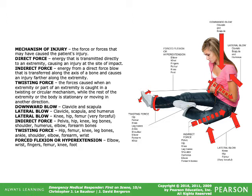A downward blow generally affects the clavicle and scapula. A lateral blow affects the clavicle, scapula, and humerus. A lateral blow to the lower extremities affects the knee, hip, and femur. Indirect force affects the pelvis, hip, knee, leg bones, shoulder, humerus, elbow, and forearm bones. Twisting force affects the hip, femur, knee, leg bones, ankle, shoulder, elbow, forearm, and wrist.